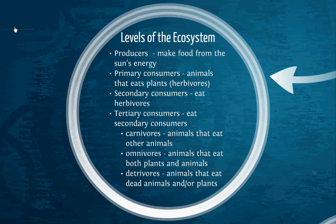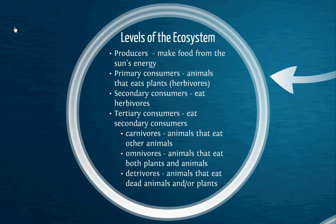But before we get to that, our levels of our ecosystem — and you need to make sure these are in your notes if they're not already — are thus. Producers make food from the sun's energy; they're plants. Primary consumers are animals that eat plants; they're also called herbivores. Now, secondary consumers eat herbivores. And tertiary consumers eat those secondary consumers. Tertiary, don't forget, is just a fancy word for the number three.